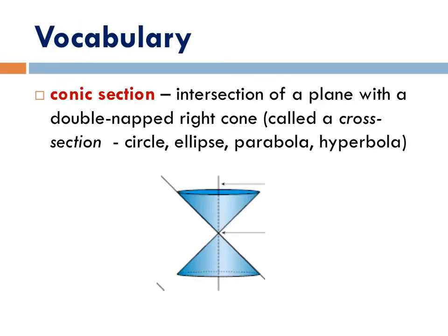Before we start, we have some vocabulary to talk about. What is a conic section? It's the intersection of a plane with a double-napped right cone. It's a kind of unusual shape, but as you can see in the image, we have an upside-down right cone on top and another right cone on the bottom — it looks like an hourglass. This shape creates the four conic sections when sliced in various ways throughout chapter 7.